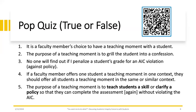Number four: if a faculty member offers one student a teaching moment in one context, they should offer all students a teaching moment in the same or similar context—and that is true. We want to make sure we're offering equitable opportunities for all students and being mindful of our biases. If we're offering one student a rewrite for a certain type of plagiarism on one assignment, and another student did something very similar on a similar assignment at a similar time in the semester, we should offer them those same opportunities.